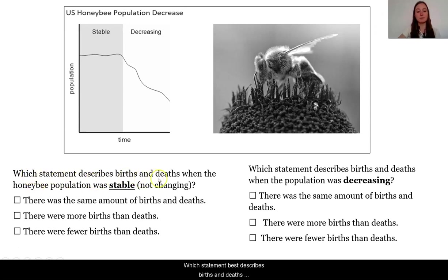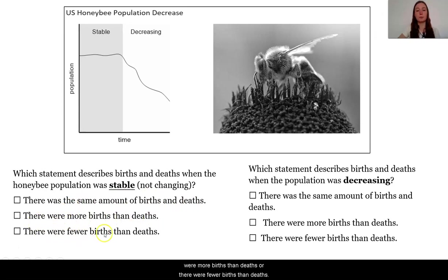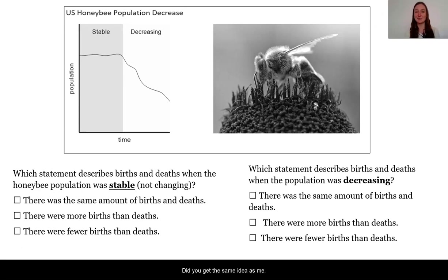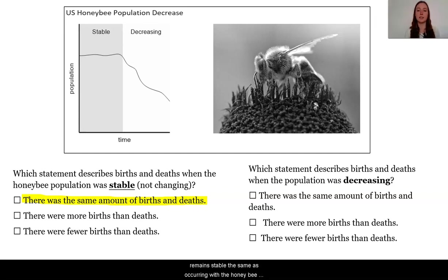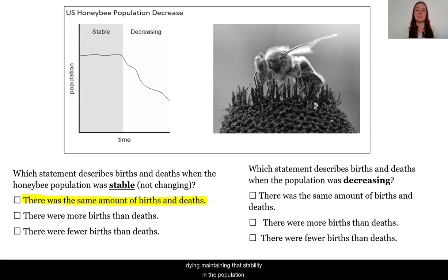Which statement best describes births and deaths when the honeybee population was stable? There were the same amount of births and deaths? There were more births than deaths? Or there were fewer births than deaths? There were the same amount of births and deaths. Just like in our model that we saw in the video, where water was coming into the tank and going out and the water level remained stable, the same is occurring with the honeybee populations. Births are going in, and honeybees are also dying, maintaining that stability in the population.